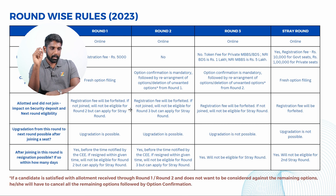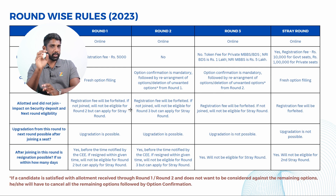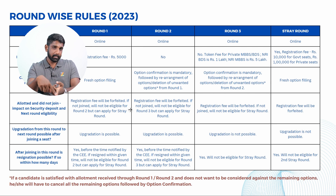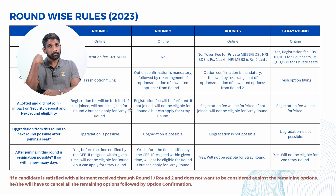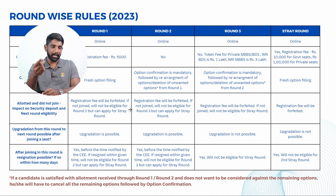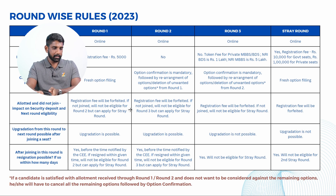Round Three is also conducted online, and fresh application is not possible. However, in Round Three there is a token fee that needs to be paid. For private MBBS or BDS seats, a token fee of ₹1 lakh has to be paid after the allotment is done. For NRI BDS seats, a token fee of ₹5 lakh is to be paid to CEE after the allotment process is done.